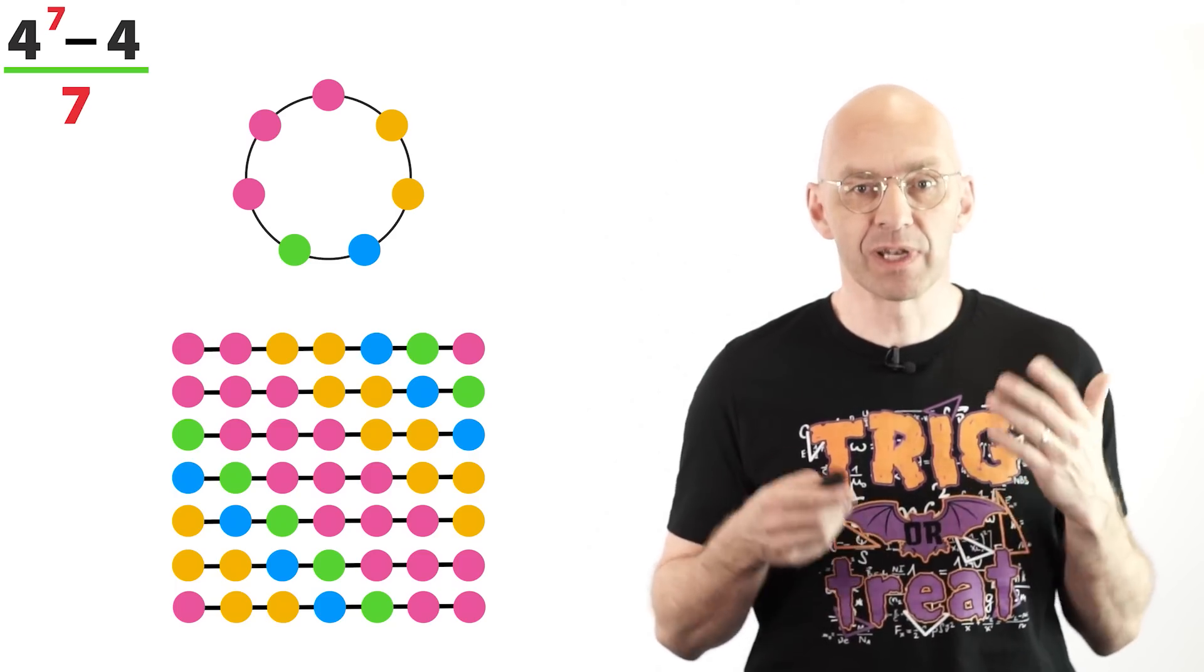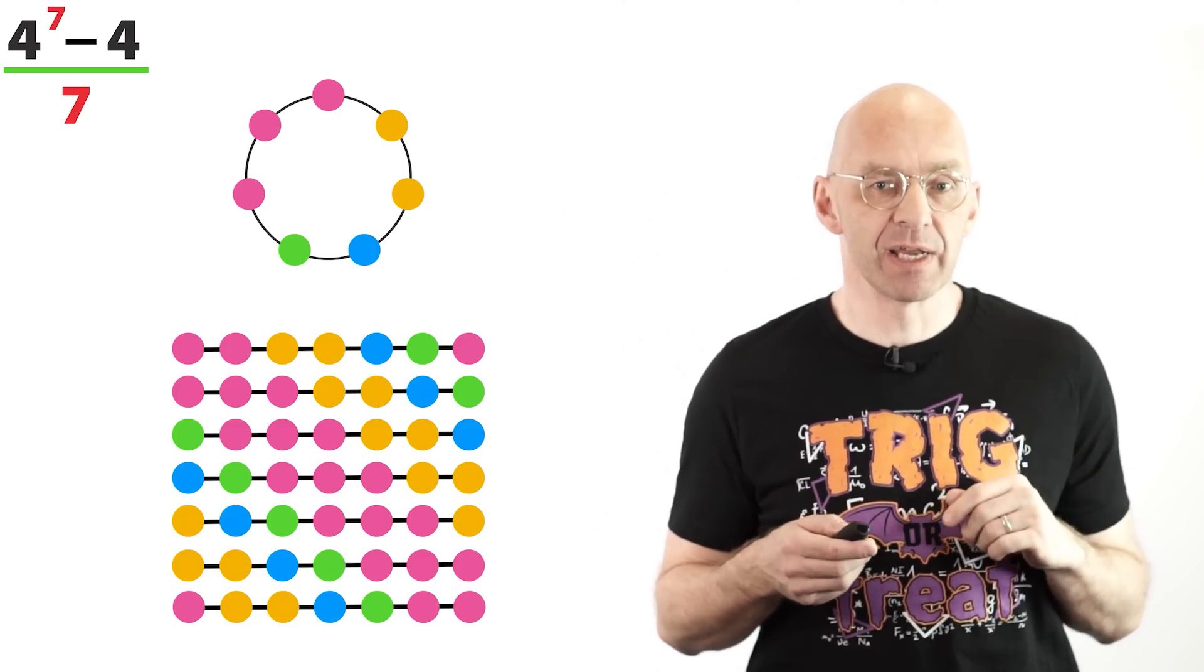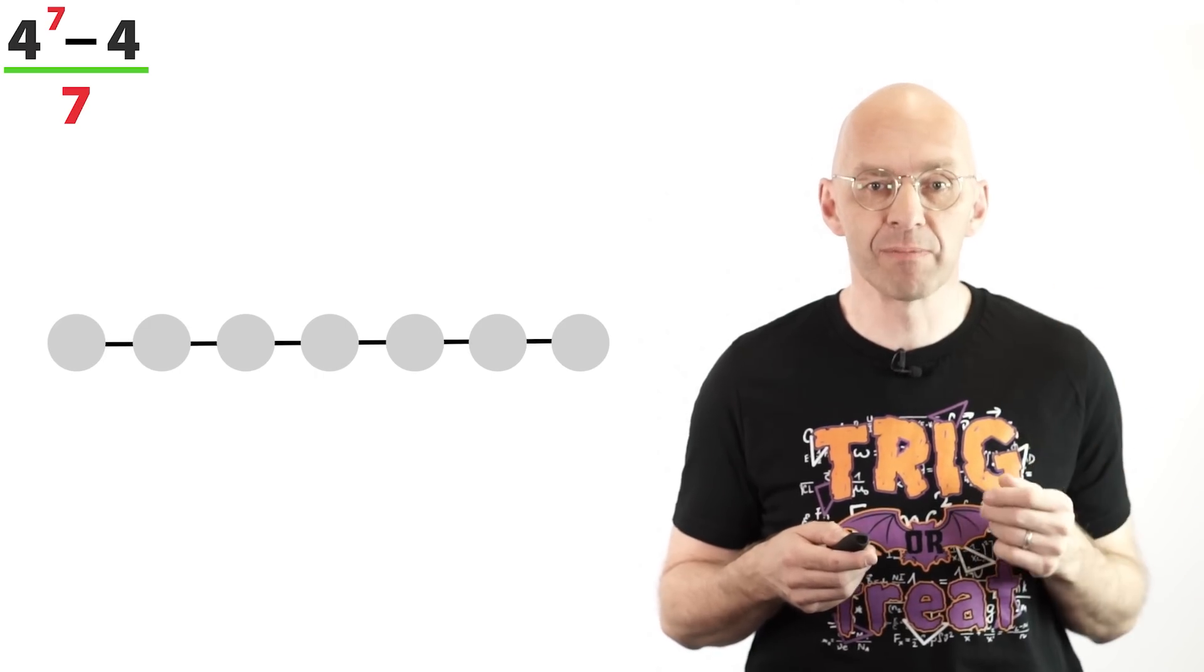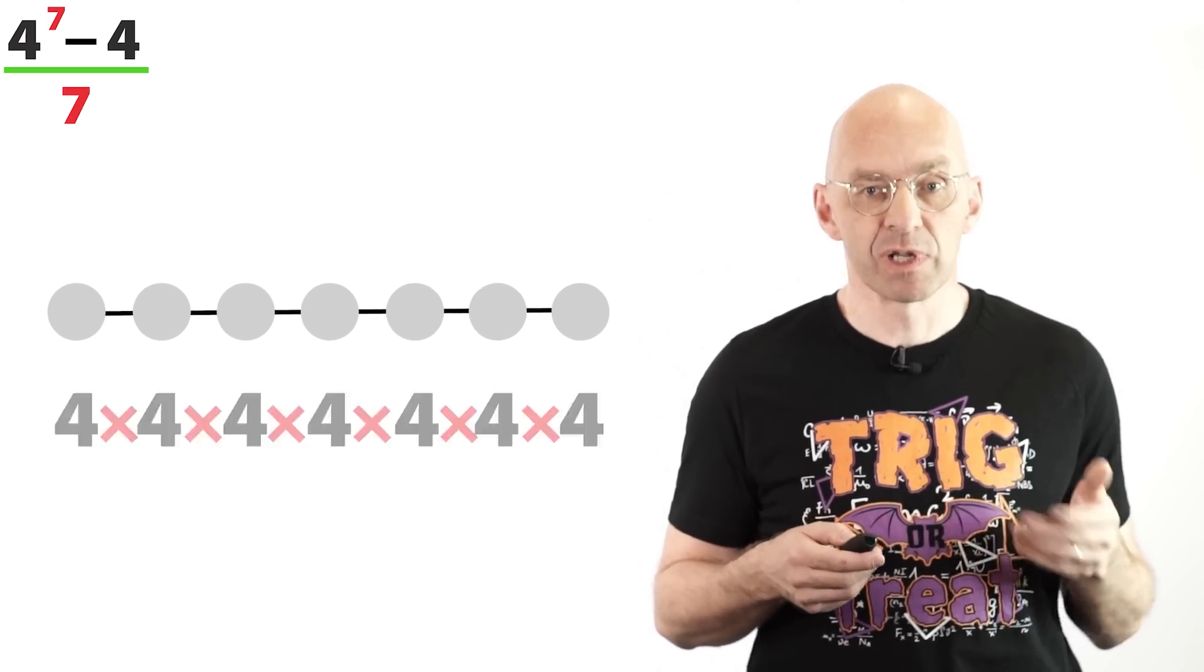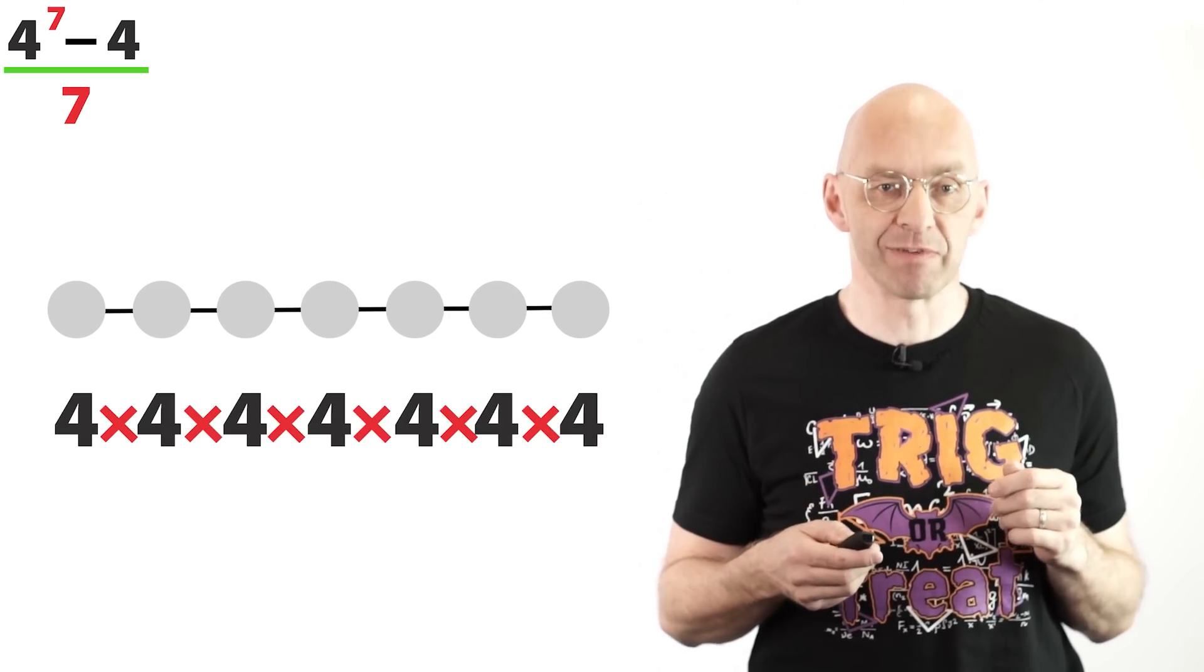And the total number of strings is very easy to count. Each string has seven beads and each bead can have any of four colors. So the total number of different strings is 4 times 4 times 4, 7 times, which comes to 4 to the power of 7 strings.